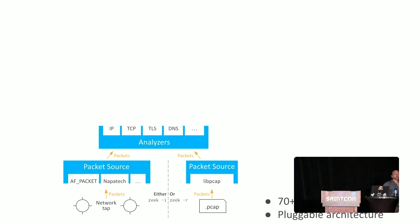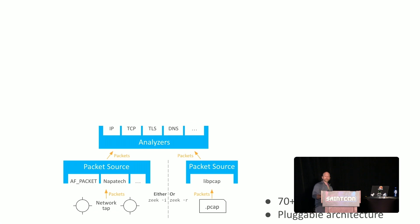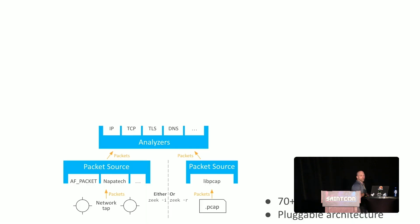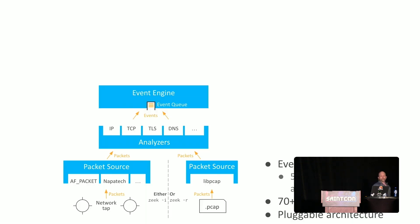We have expanded visibility into protocols like BACnet, Modbus, DNP3, OPC-UA, Genisys, S7-COMM, and a few other OT protocols. We take those and bring them into the protocol parsers, then send the data to events. Zeek has a distributed event-based system, and its event engine has over 500 type events and arguments. These events are declared programmatically.